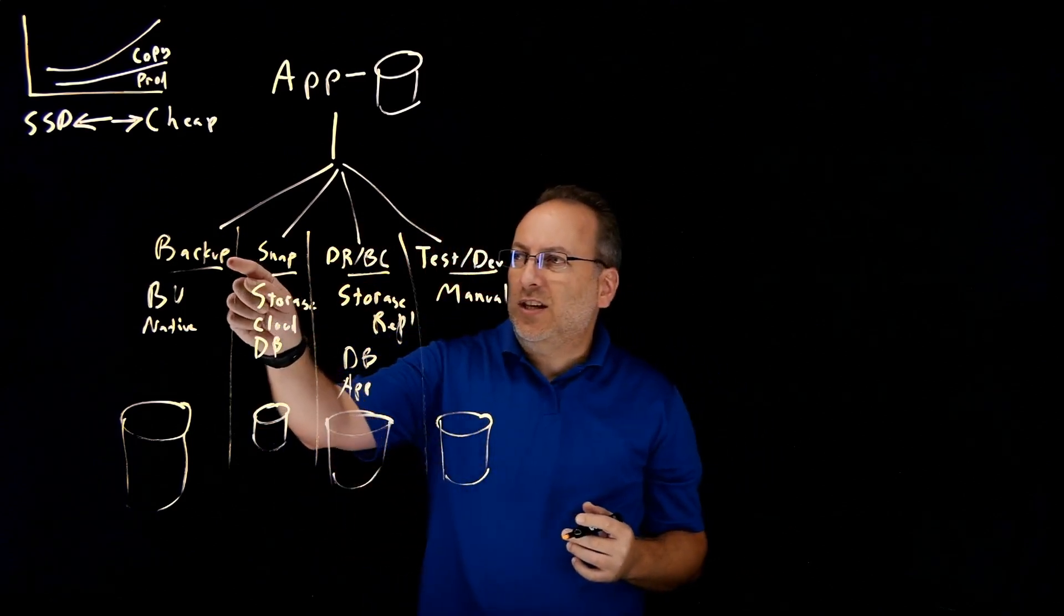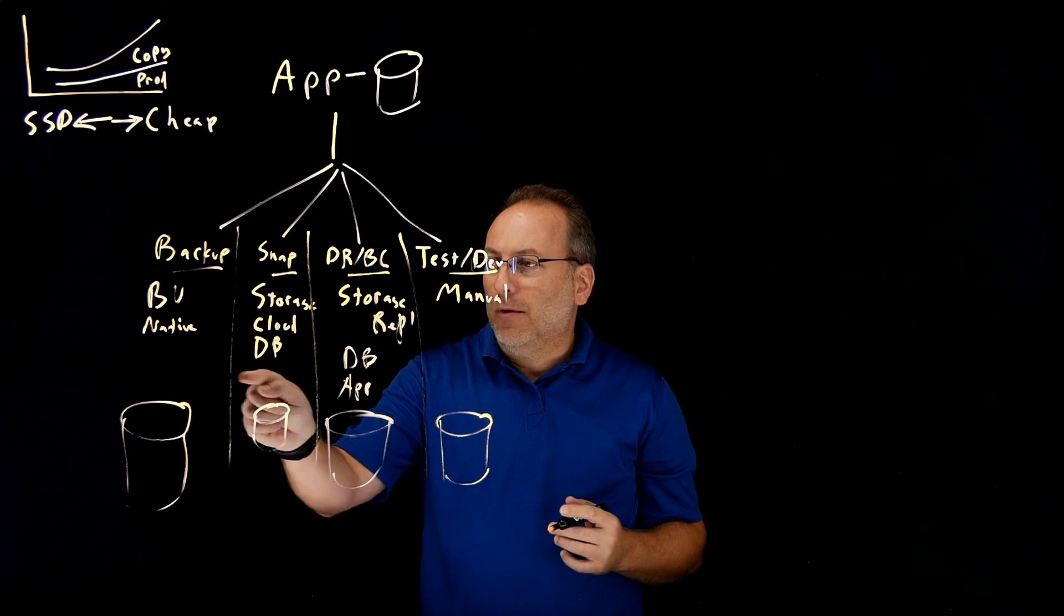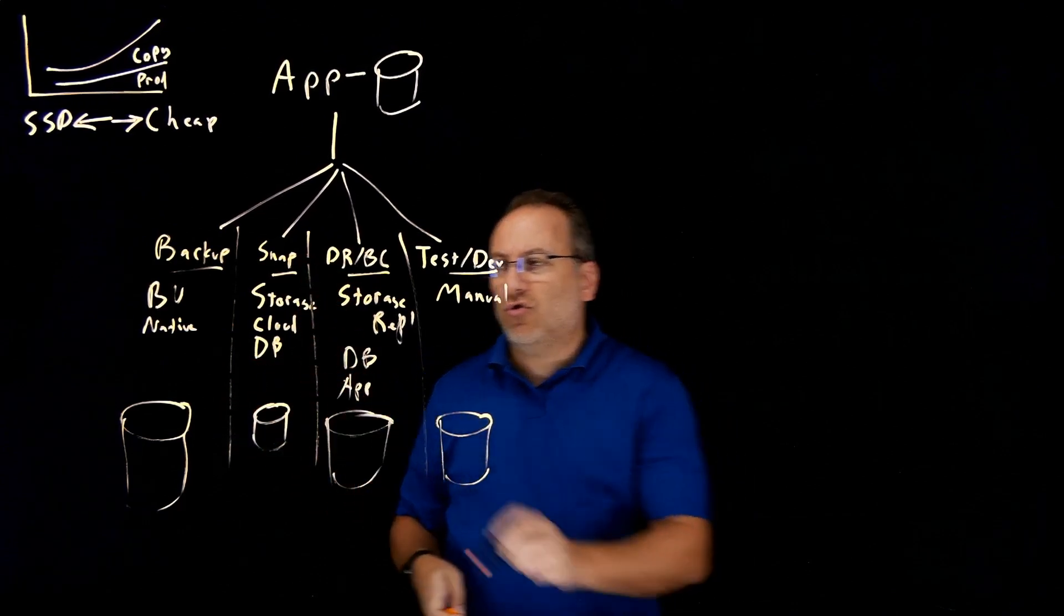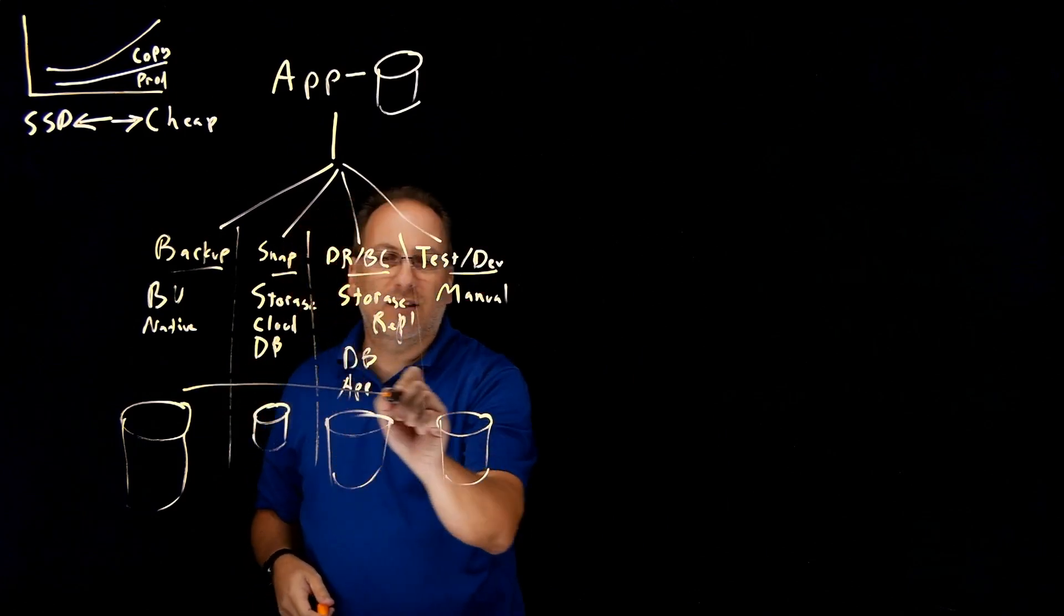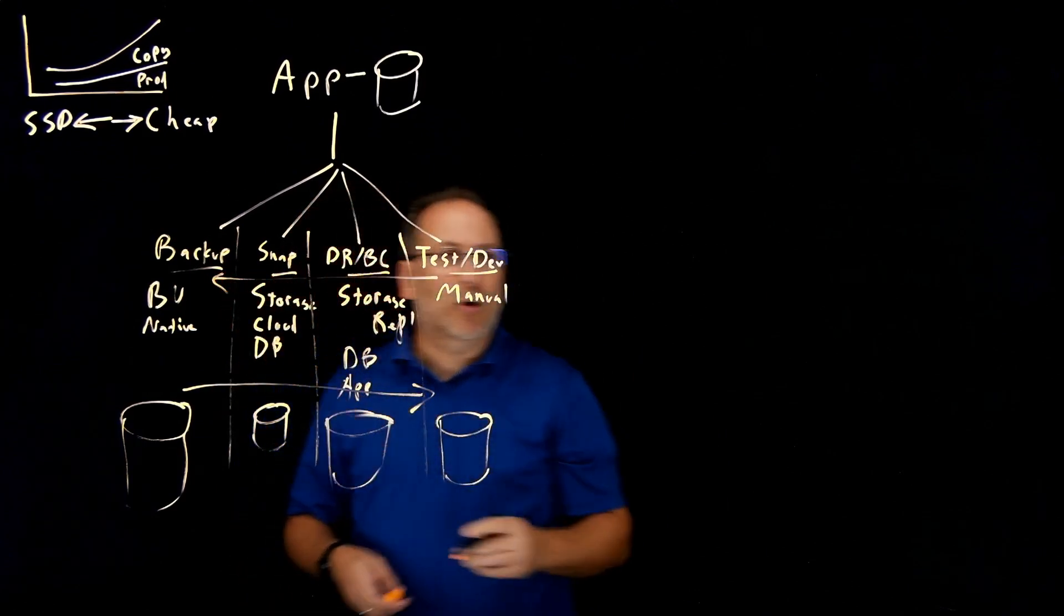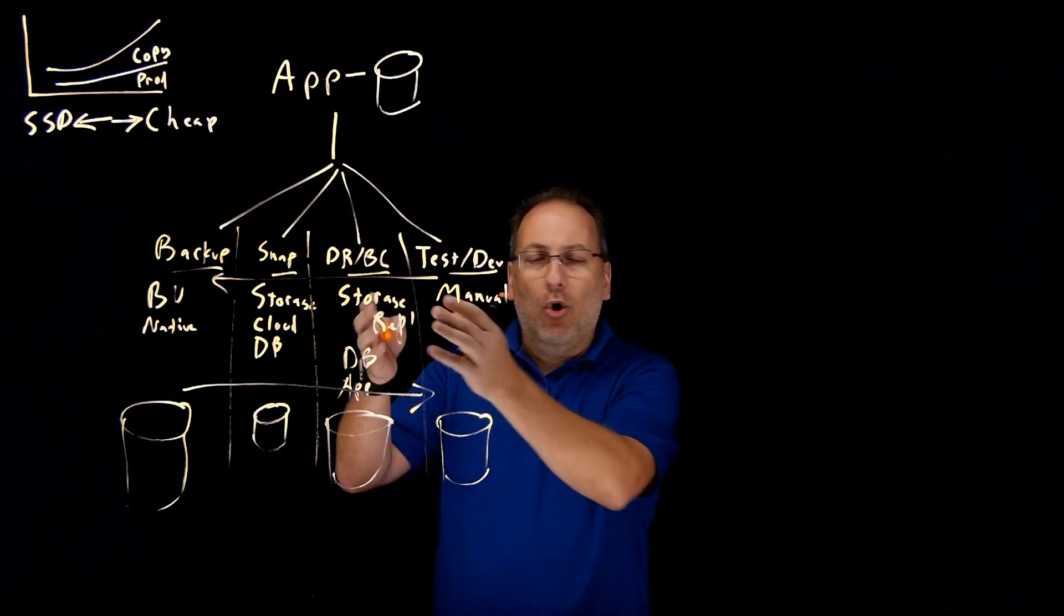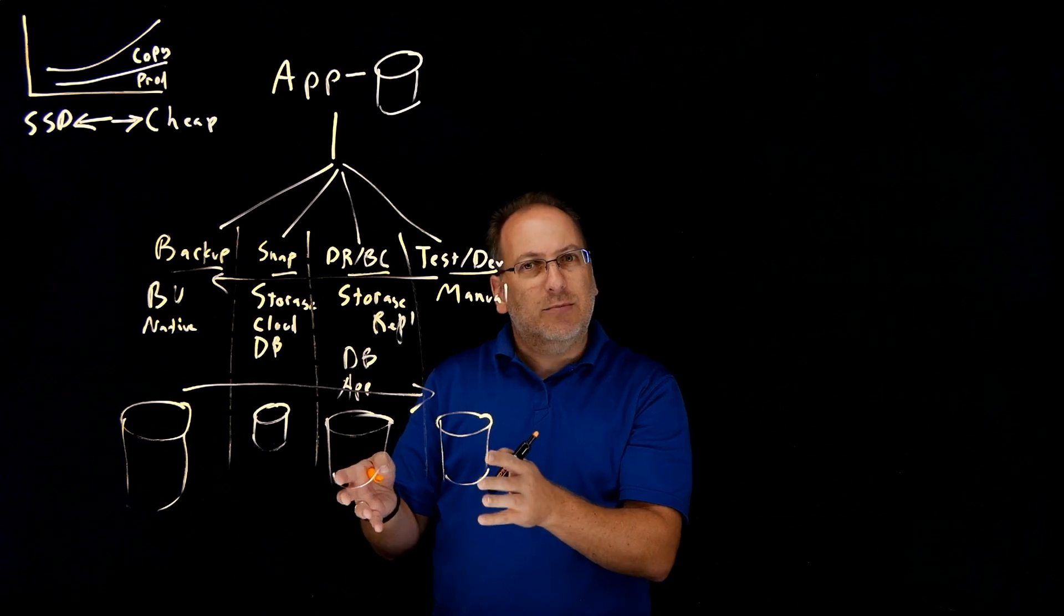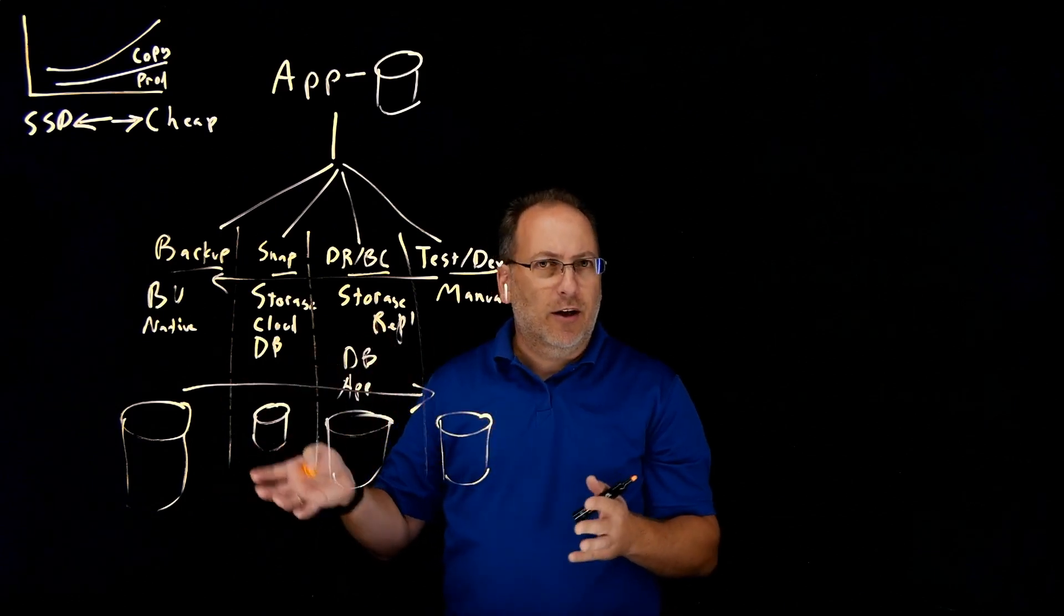Now, more recently, we've seen gaps or blending of this line, if you will, where some of the products are trying to do some of the things that the other categories do and vice versa. But what you still have is a product with a home base in a particular silo, trying to expand out. So it tends to be better at one thing than it is at all the others.